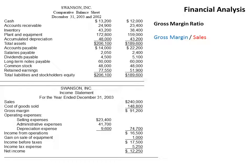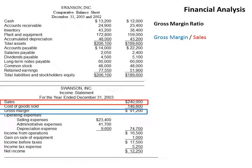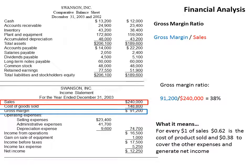Next we'll look at the gross margin ratio, which is gross margin divided by sales. Gross margin is sales minus cost of goods sold. In this example, gross margin is $91,200 — it will often be stated on an income statement. If not, just take sales minus cost of goods sold; sometimes it's listed as cost of revenue. We divide $91,200 by $240,000 to get 38%. That means for every $1 in sales, $0.62 is the cost of the product, and $0.38 is left to cover other expenses and generate net income.